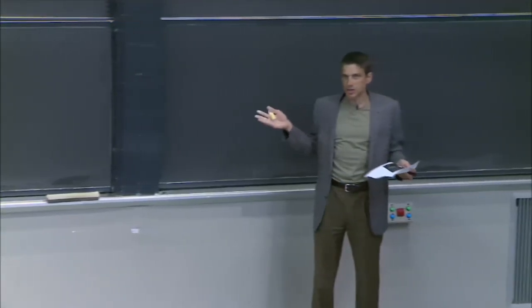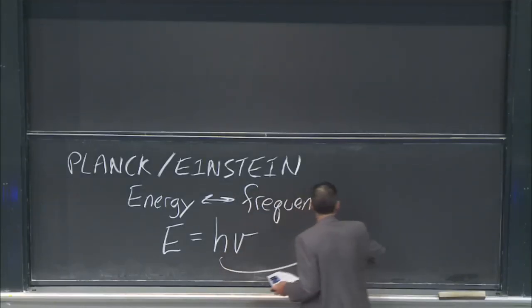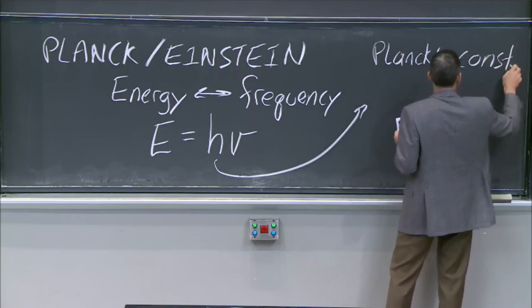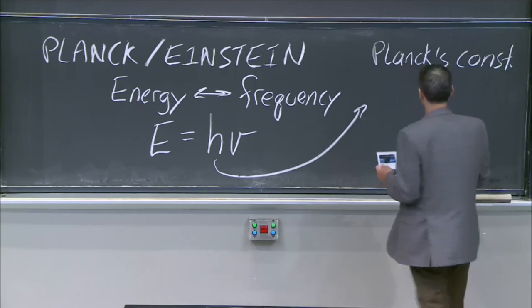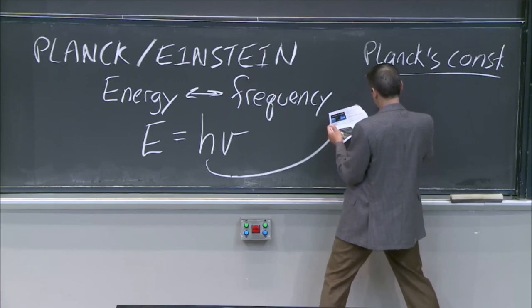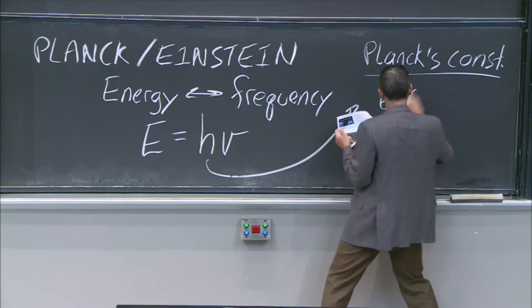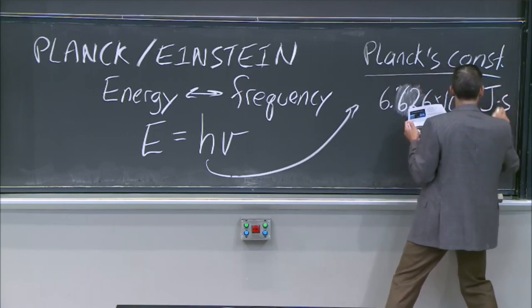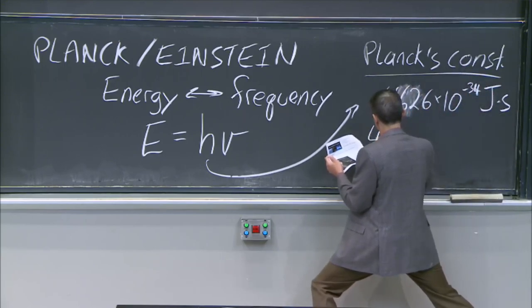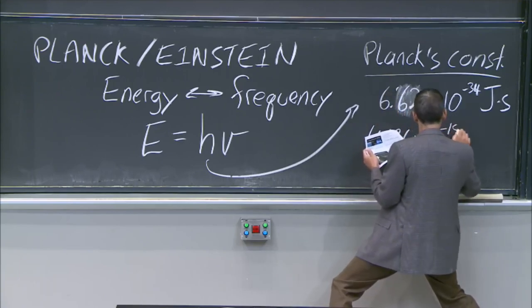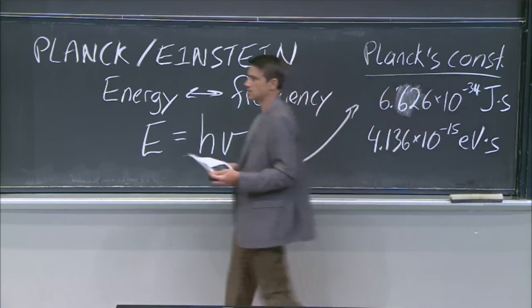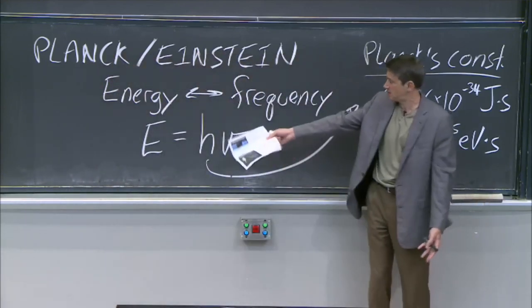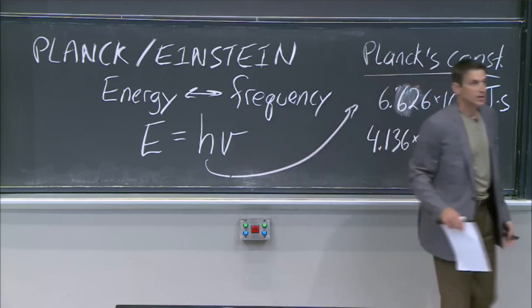This is a constant named Planck's constant h, and like other constants it has a value that doesn't change. The value for Planck's constant is 6.626 times 10 to the minus 34 joule-seconds, or equivalently 4.136 times 10 to the minus 15 electron-volt seconds. Notice the units are energy times time — and you can see that it must be, because energy divided by frequency gives energy times time.